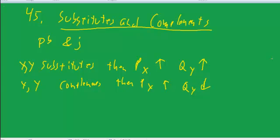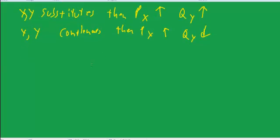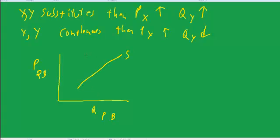So that's the definition of substitutes and complements. Let's see how that works in the peanut butter and jelly market. So this is the price of peanut butter, and this will be the quantity of peanut butter, and we'll draw supply and demand curves.